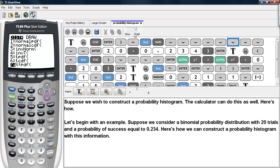We begin entering in the binomial probabilities under these conditions. So we go under SECOND VARS, which is DISTRIBUTIONS, and we scroll down until we find BINOMIAL PDF.